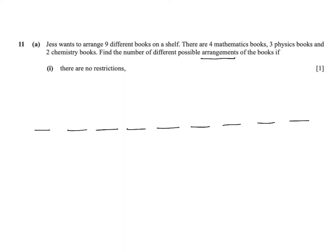It's asking us to find the number of ways to arrange nine different books with no restrictions, so we don't need to care about the four math books, three physics books, and two chemistry books. So that means nine books can be here, eight books, seven books...